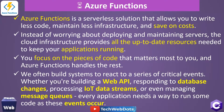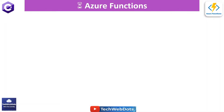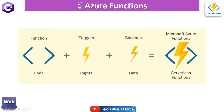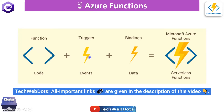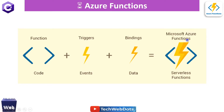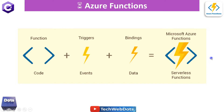Looking at a basic diagram: when we say 'functions,' we mean a piece of code. When we talk about 'fins' (triggers), we are talking about a trigger — it can be an add trigger, update trigger, delete trigger, or anything. On triggering, we can process data and bind input or output data. The combination of all these things is what we call Microsoft Azure Functions, also called serverless functions because Microsoft Azure maintains everything.